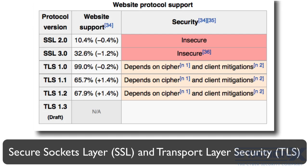SSL and TLS use all the cryptographic technology we have gone through already, including the symmetric and asymmetric algorithms, hashes, digital signatures, and message authentication codes to make a working security protocol. SSL and TLS are cryptographic protocols designed to provide communication security over a network or the internet.